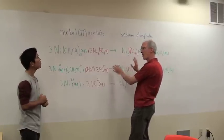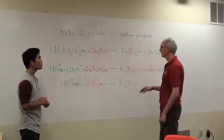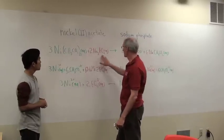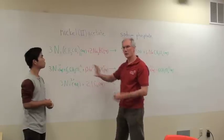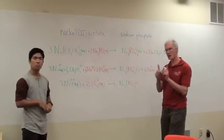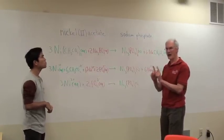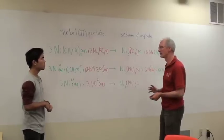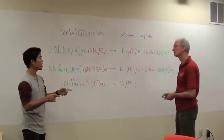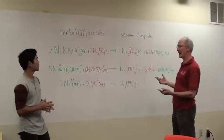What happens is that the partners switch. This cation grabs onto that anion. This cation grabs onto that ion. So we just switch partners. You've got to make sure that the cation matches with an anion. You can't match a cation with a cation. They're going to repel each other. Because opposites attract. The same repel.